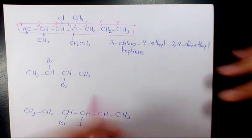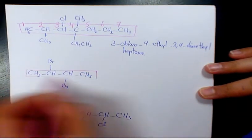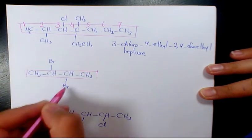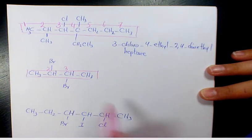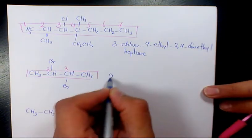Next one, we have four carbon. You have two bromo. One of them is going to be two, the other one is going to be on the third carbon. You can number it from this side, doesn't matter. So it's going to be two and three.